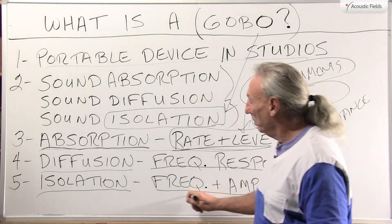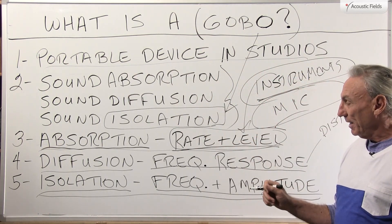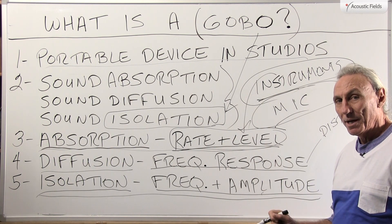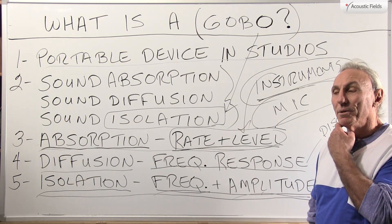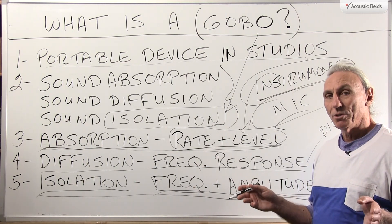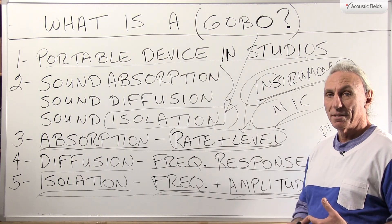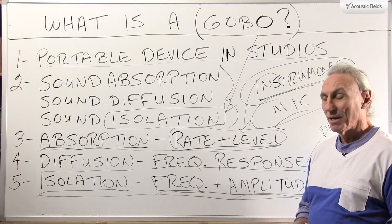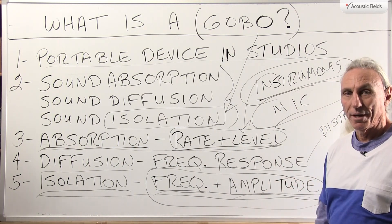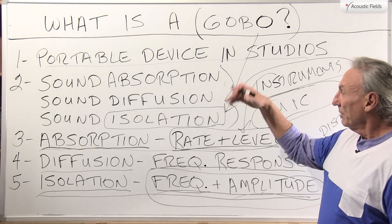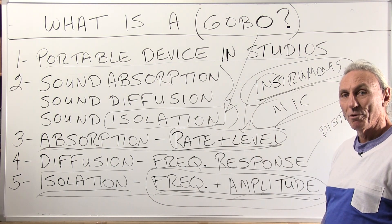In the strictest meaning of the term, a gobo is an isolation device, and if it's an isolation device it's a barrier technology — we need to know what frequency and amplitude it's isolating from. I see a lot of drummers use clear plastic shields — that's kind of a gobo, a barrier technology. It's very dense because it's thick plastic, so it will isolate, but you need to know the frequency and amplitude. That's a general breakdown of a gobo and the three features it can be used for. Thank you.